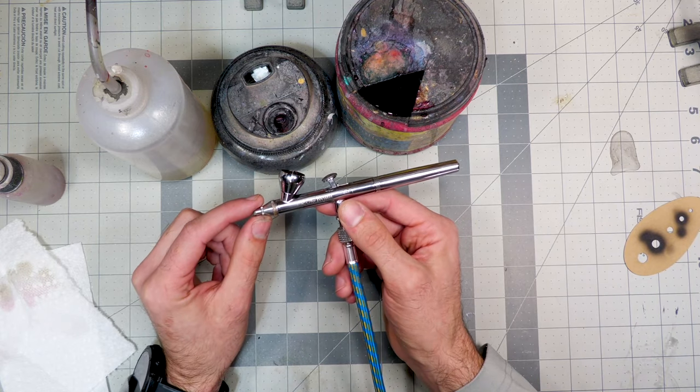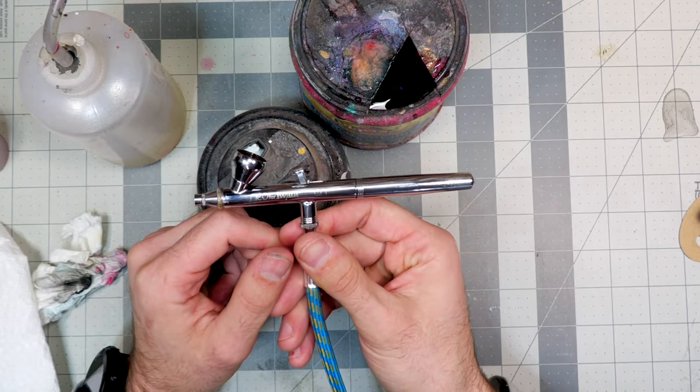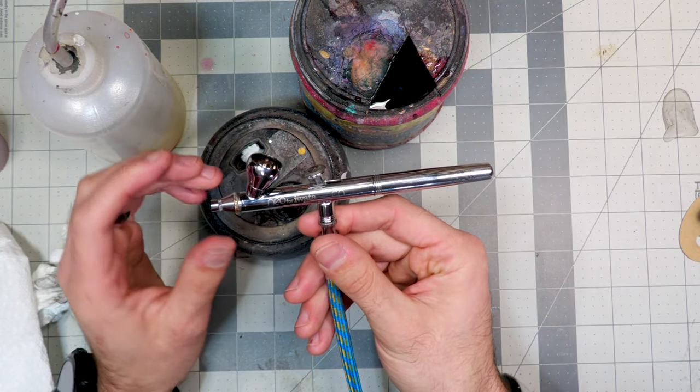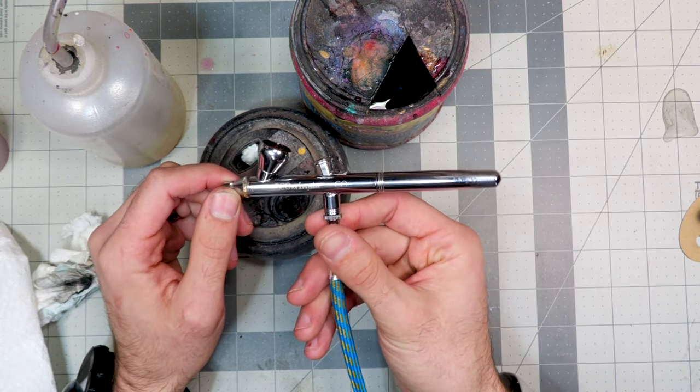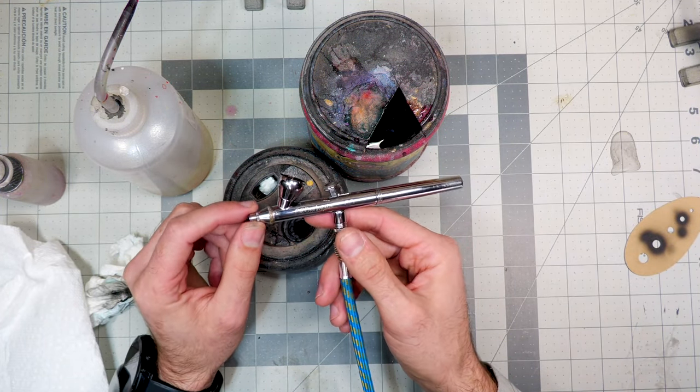For me, I use Windex airbrush cleaner and just straight water and haven't had any problems with it so far. I do recommend at the end of the day when you're done painting to go ahead and take apart the front of it and clean everything out properly. As far as switching between colors, that's how I do it and it has been working great for me.